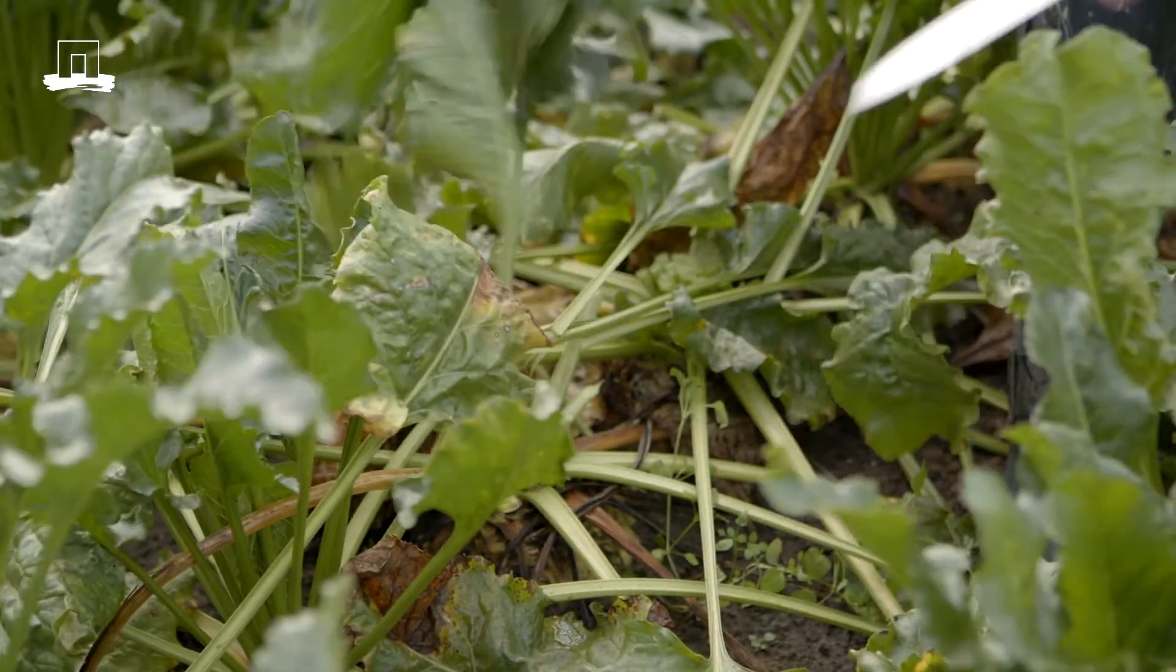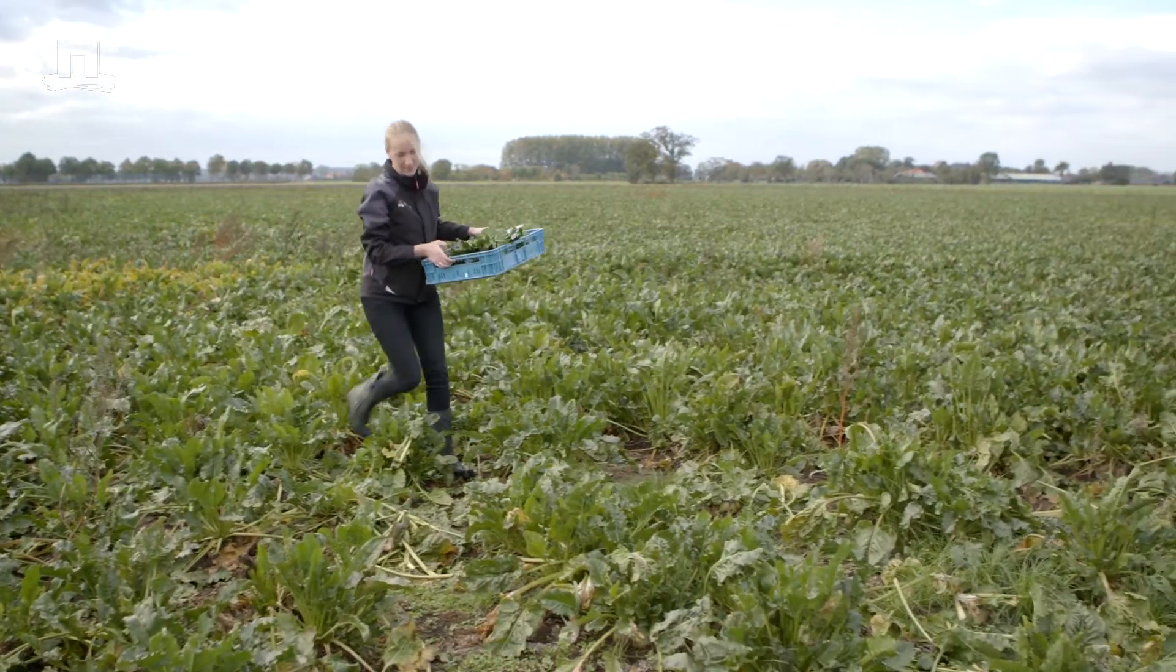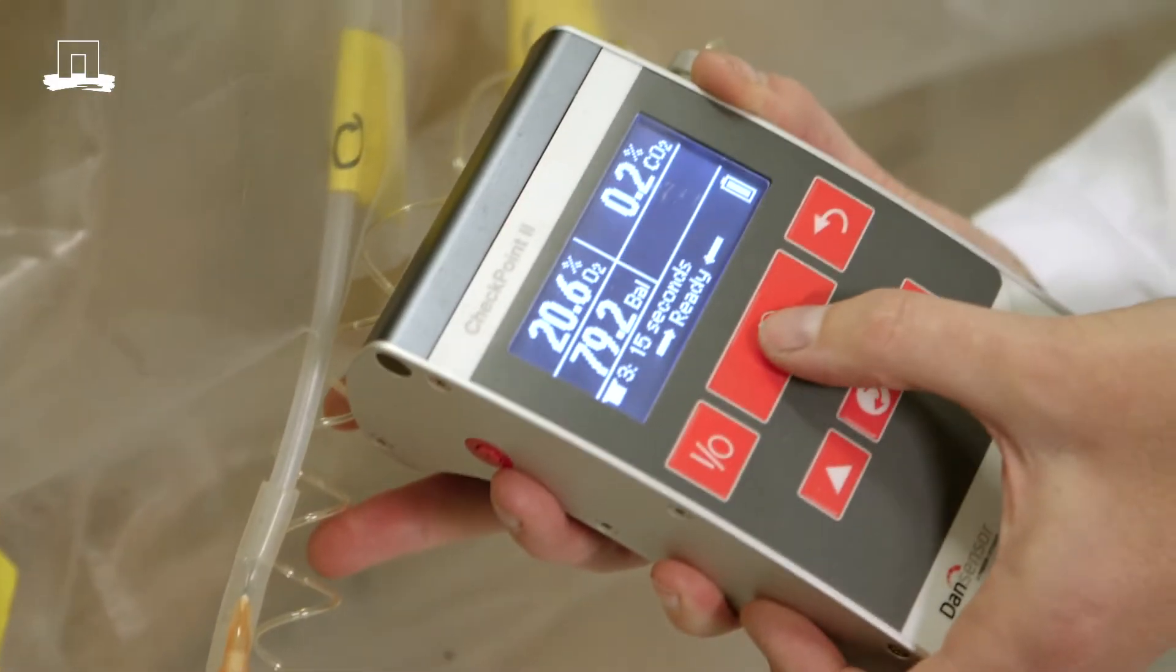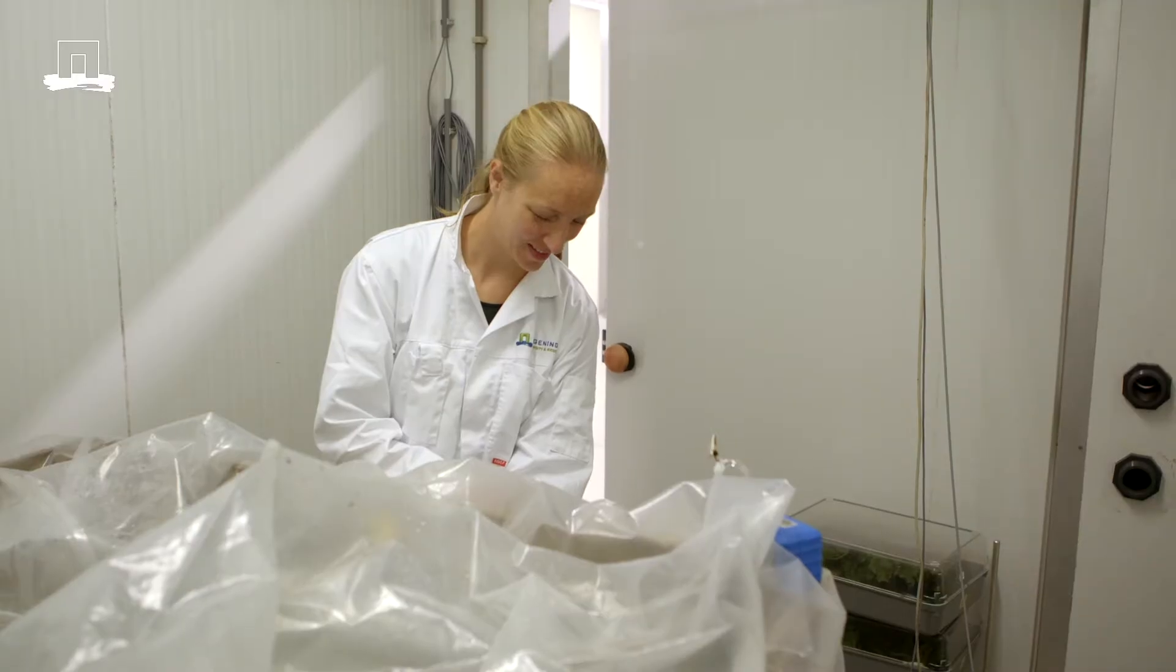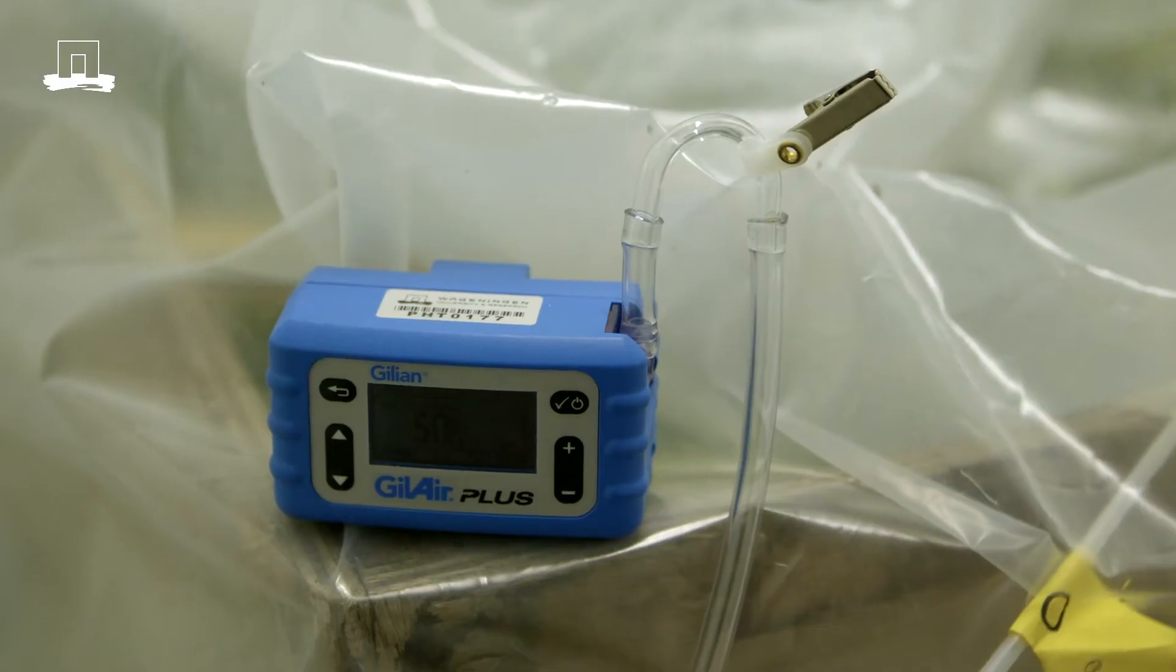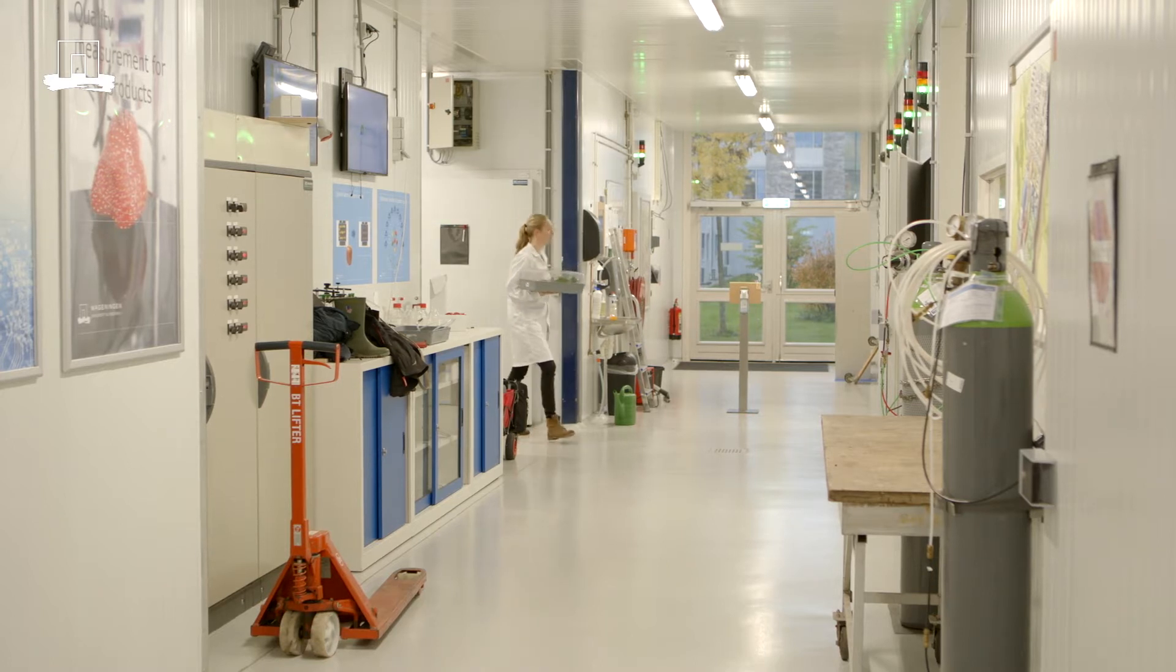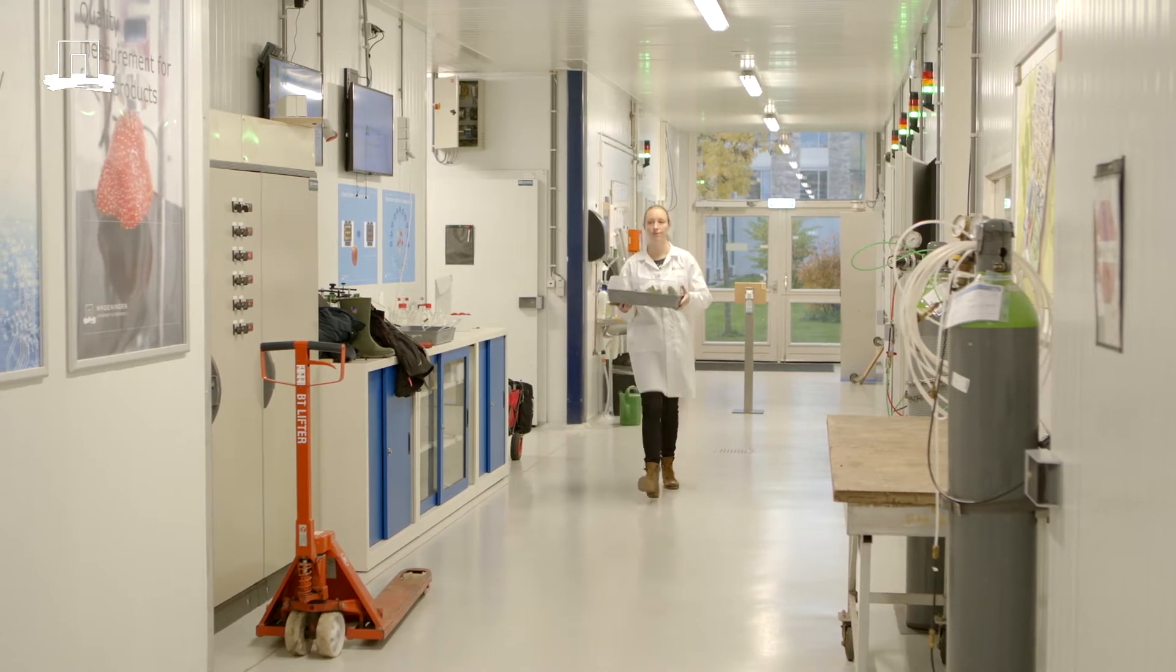For this experiment, we harvest leaves, followed by storage at different temperatures. Small boxes for precise measurements on laboratory scale are used, as well as bigger bins to mimic more realistic storage conditions. All conditions like temperature and air composition are well monitored.